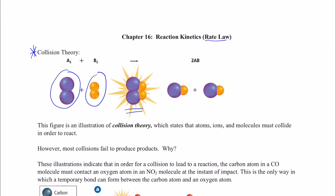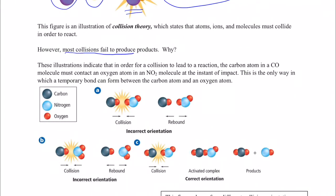When they do, we expect two molecules of AB to be formed. Now that seems pretty cut and dry — all molecules need to do is bump into each other and they'll react. In reality it's much more complicated than that. Most collisions fail to produce products.